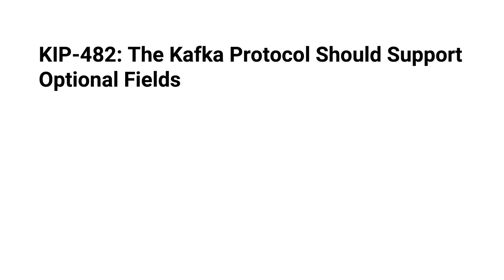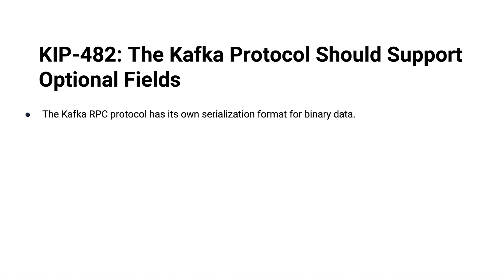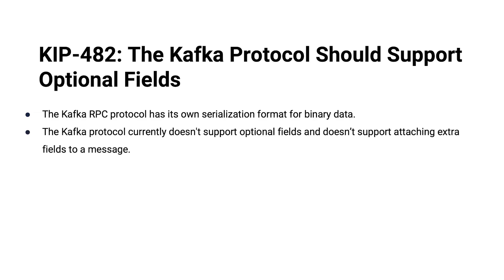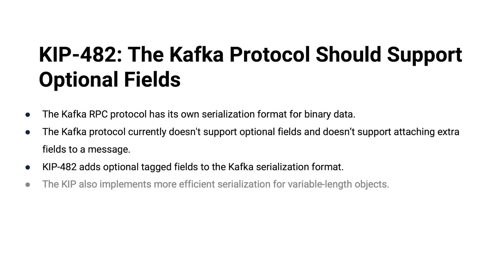KIP 482: the Kafka protocol should support optional fields — and now it does. In the RPC interface used between brokers in a Kafka cluster, there is a strongly typed serialization format. It's also used in various structures on disk, like storing offset indexes. Before this KIP, it was not possible for a field to be nullable, and it was not possible to add optional tagged fields — like a transaction ID or a content type. Now, with this KIP, you can. The KIP also provides more efficient storage of variable-length fields, so just some improvements all around to serialization.